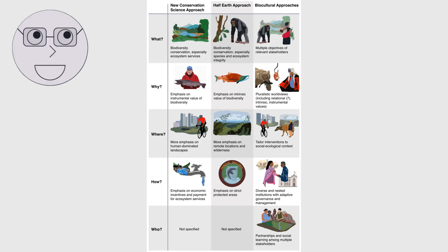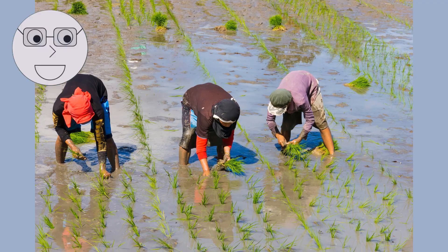Understanding the different types of biodiversity is crucial for the conservation and management of our planet's resources. By protecting and preserving biodiversity, we can ensure the survival of all living organisms and maintain the balance of our ecosystems. The visuals show examples of conservation efforts such as reforestation, wildlife sanctuaries and marine protected areas.